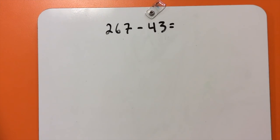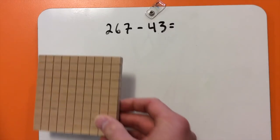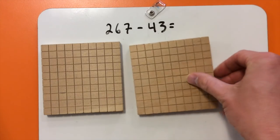For the second problem, let's start with place value cubes again. So 267 take away 43 means I need to start with 267. And from that, I'm going to take away the 43. So there's 100 and 200. And then I'll get my 6 tens.